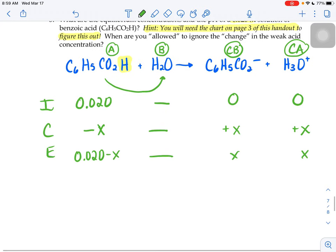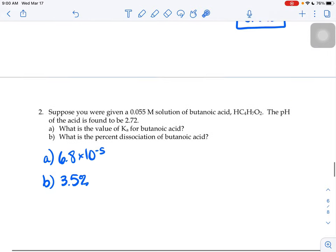It asks when you're allowed to ignore the change in the weak acid concentration. When are we allowed to estimate, because this is a weak acid, not much of it is going to dissociate into ions, x should be a pretty small number. And so if x is a pretty small number, we want to know when are we allowed to kind of approximate this x to zero, that we don't have to worry about it. That's where our chart's going to come in, so we need to find benzoic acid on that chart.